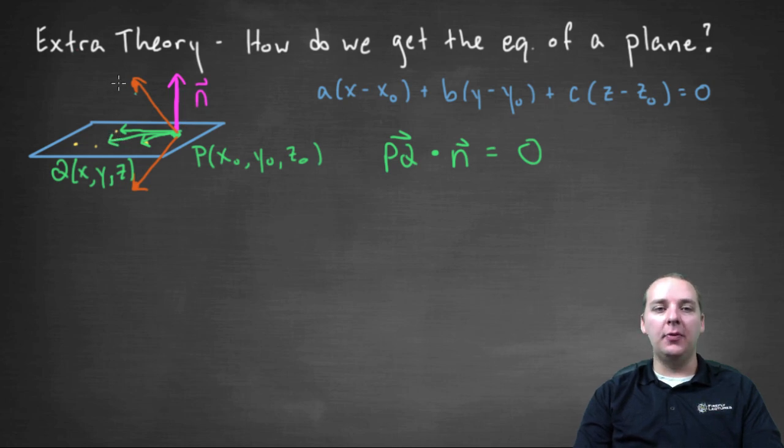And that wouldn't happen for one of the orange vectors that I have drawn here from P to a point, not in the plane. So this is what we're going to exploit, this unique factor about vectors that are in the plane.